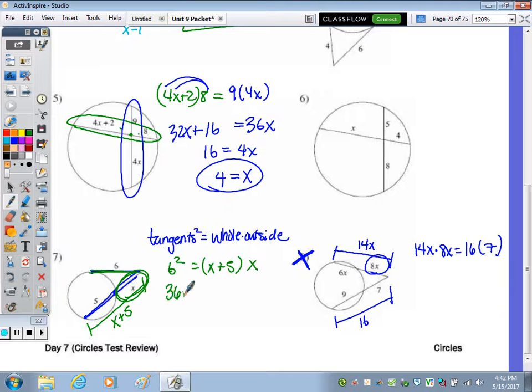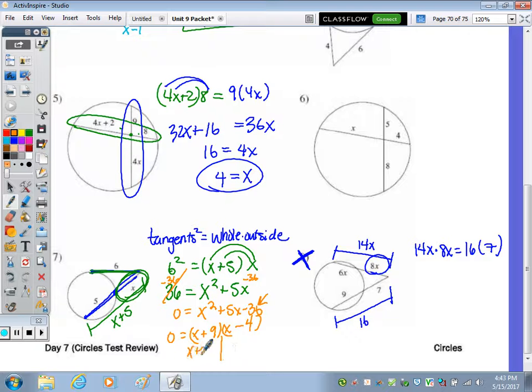So you end up with 36 equals, distribute, x times x is x squared. And because we have a quadratic, we want it set equal to 0. So move the 36 over by subtracting. And we get 0 equals x squared plus 5x minus 36. To solve by factoring, you set up your two parentheses. So it's going to be x times x. The factors of 36 that combine to 5 are going to be 9 times 4. 9 times 4 is 36. And a positive 9 minus 4 is a positive 5.